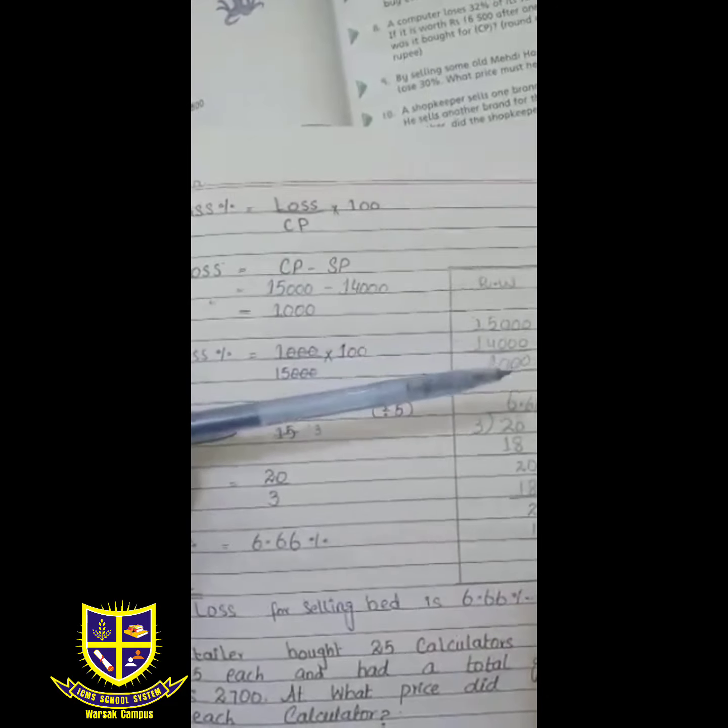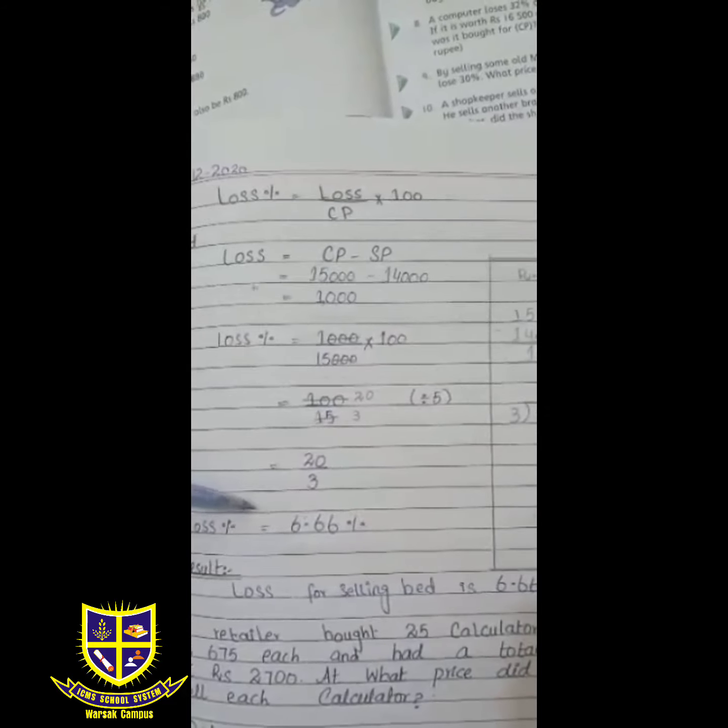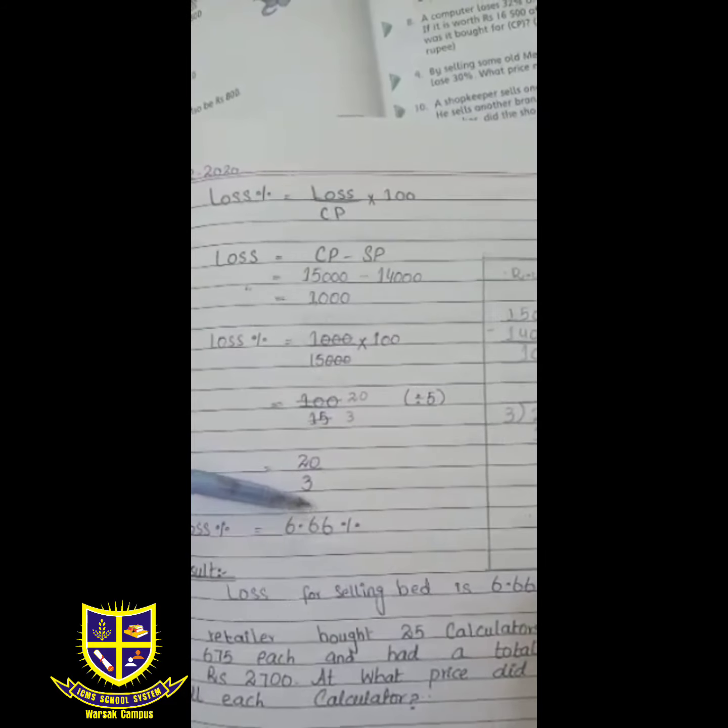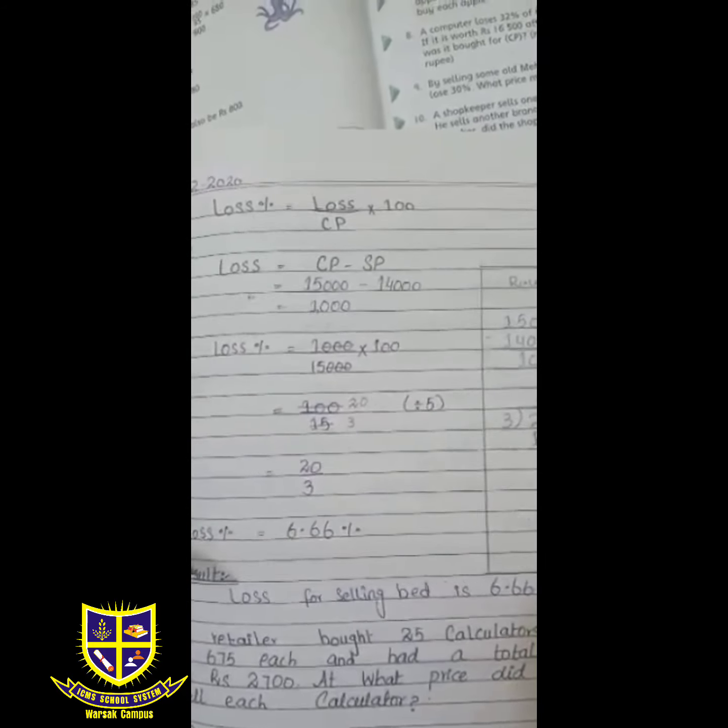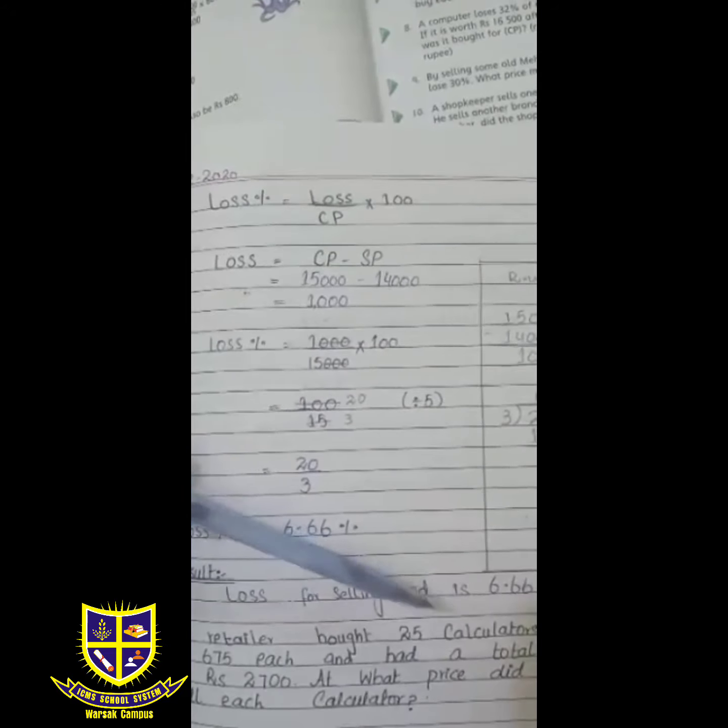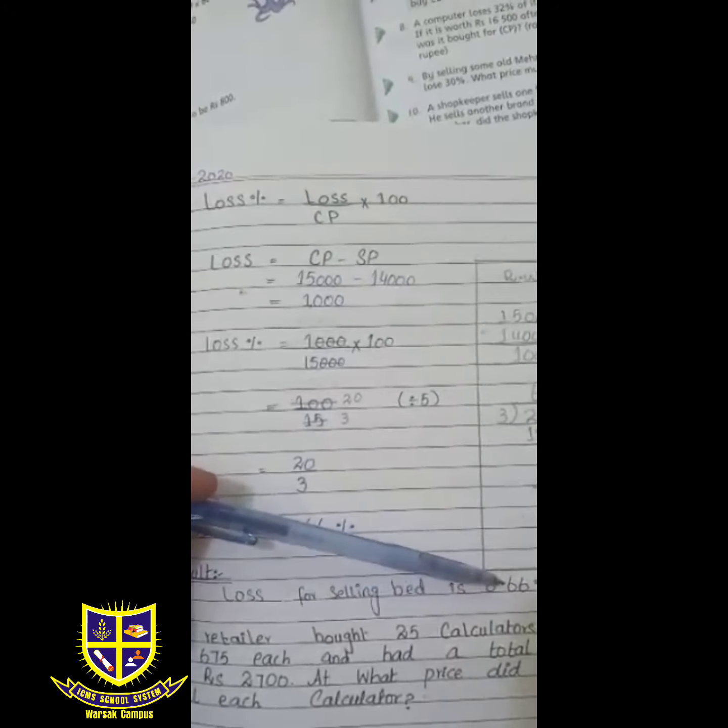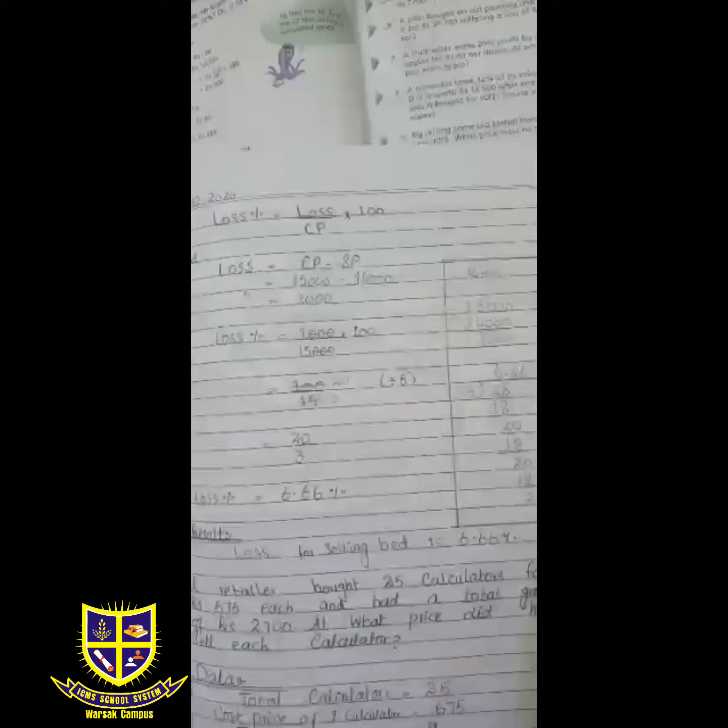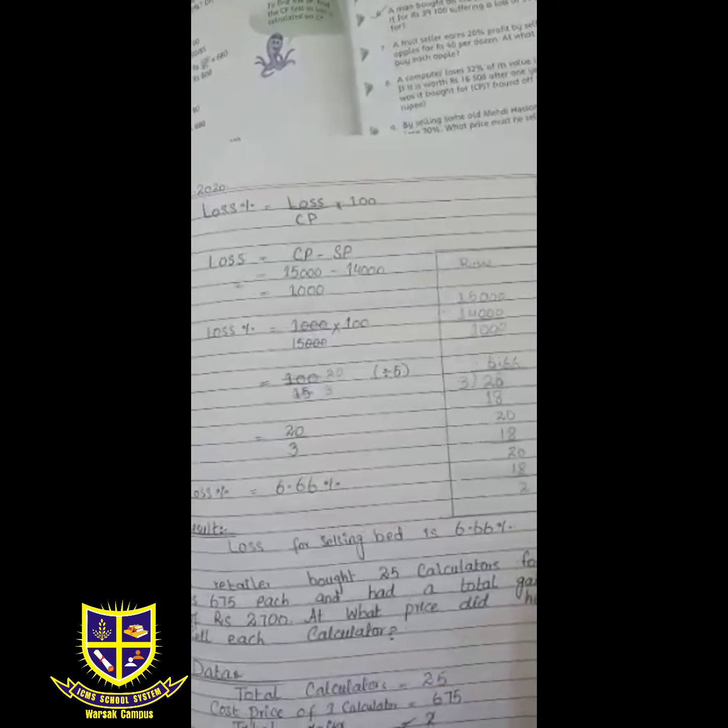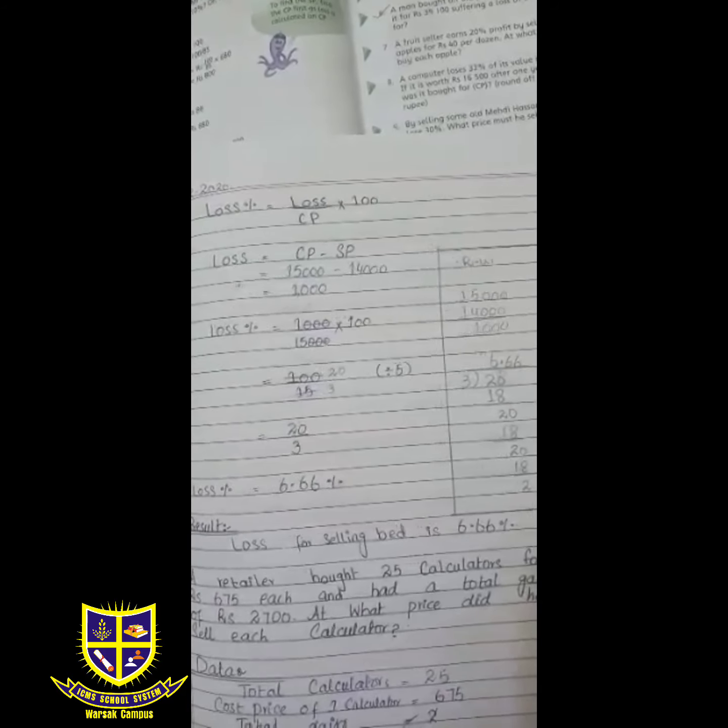Which is 6.66. Loss percentage is 6.66 percent. Loss for selling bed is 6.66 percent. Hope you all understand these questions. In the next class we will proceed with the remaining parts of this exercise.